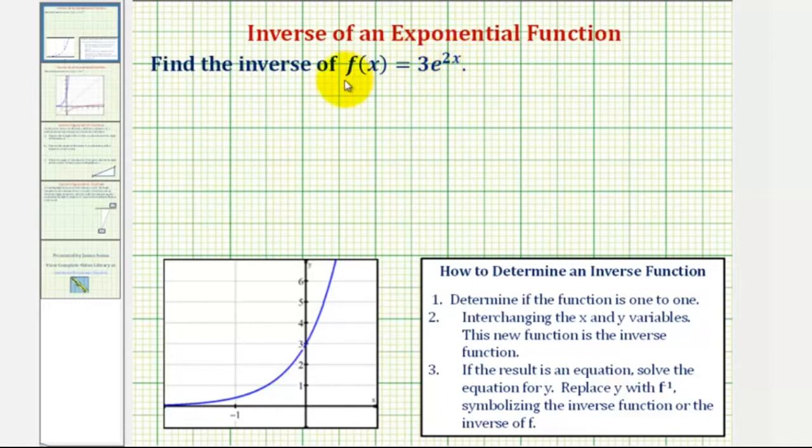The first thing we'll do is determine if the given function has an inverse function. Only one-to-one functions have inverse functions. A one-to-one function is a function where every output or every function value has only one input or one x value. So every y value can only have one corresponding x value.